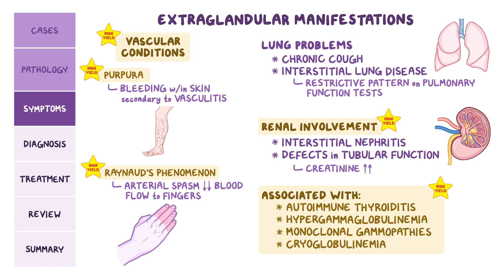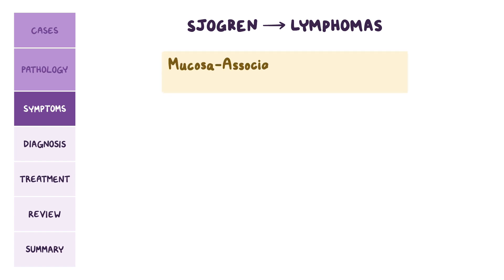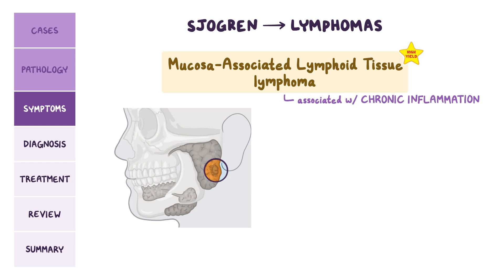A really high-yield concept to know is that over time, Sjogren's syndrome can lead to lymphomas. One type is a non-Hodgkin lymphoma called mucosa-associated lymphoid tissue, or MALT lymphoma, which is typically associated with chronic inflammation. MALT lymphoma can present as nodular parotid enlargement instead of the diffuse enlargement normally seen in Sjogren's syndrome.